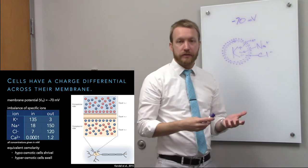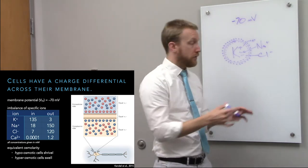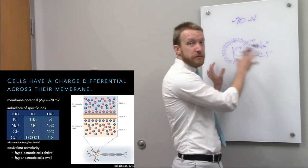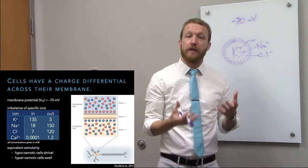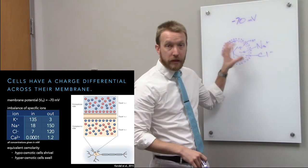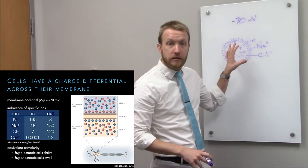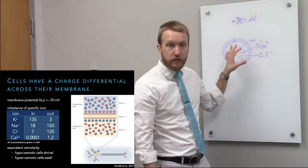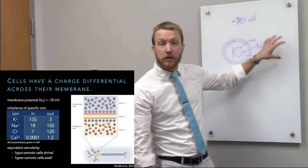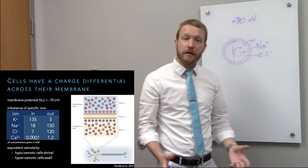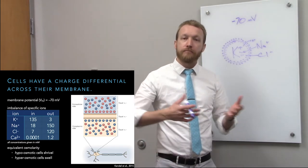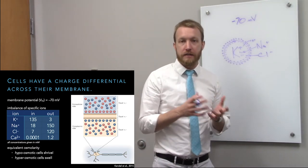There's no gross difference in the amount of stuff inside versus outside — about the same amount, just different stuff. Inside we have more potassium and impermeable anions like phosphates; outside we have more sodium and chloride. About equal osmolarity in the cell and out.